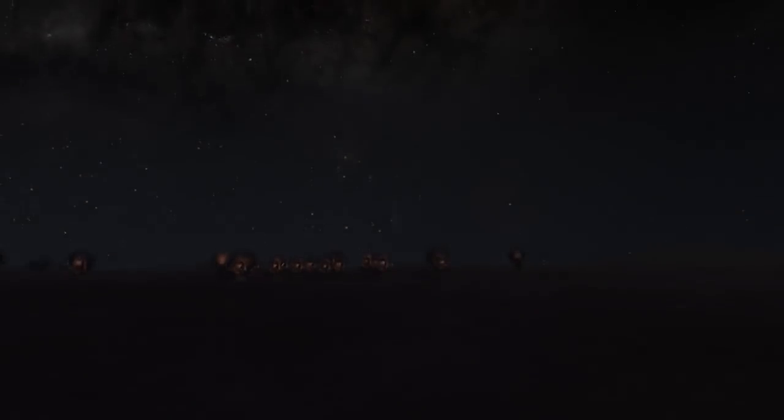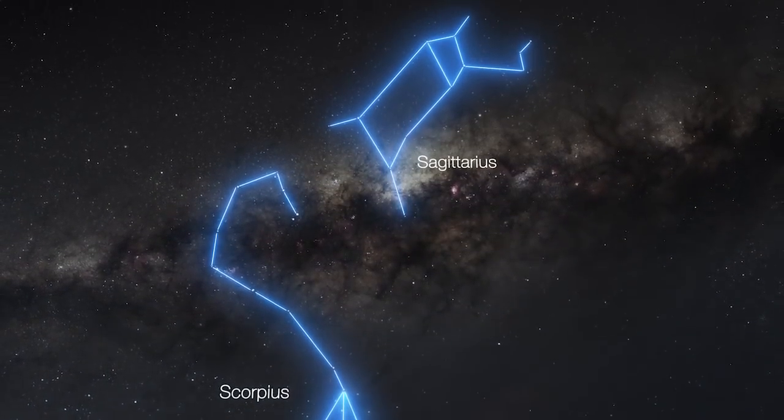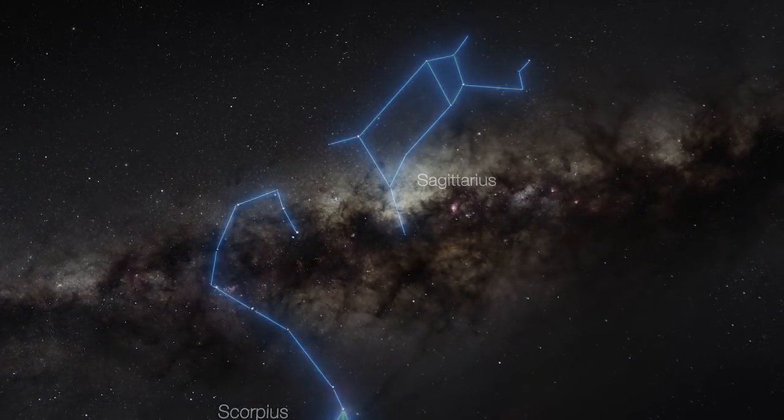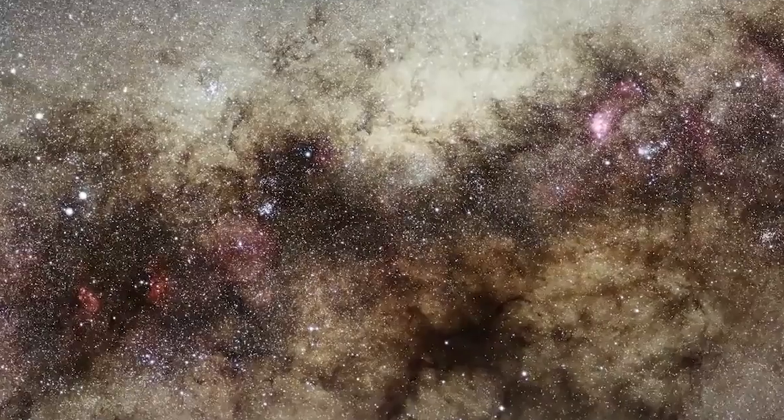In the end, the EHT team did manage to overcome all these obstacles. So here it is, the first image of Sagittarius A-star, the black hole at the center of the Milky Way.